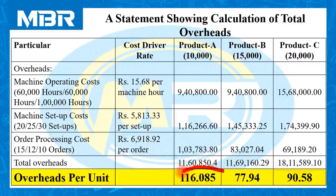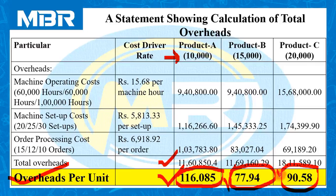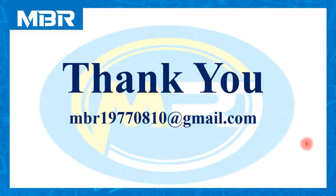To calculate overhead cost per unit, simply divide total overheads by number of units: Rs 11,60,850.40 ÷ 10,000 = Rs 116.085 for product A; Rs 77.94 for product B; and Rs 90.58 for product C. In this way, you can classify your overheads among different products using the scientific method of distribution — that is activity-based costing. I hope everybody is clear with the calculation of overheads under ABC. Thank you, keep watching the next sessions. God bless you.